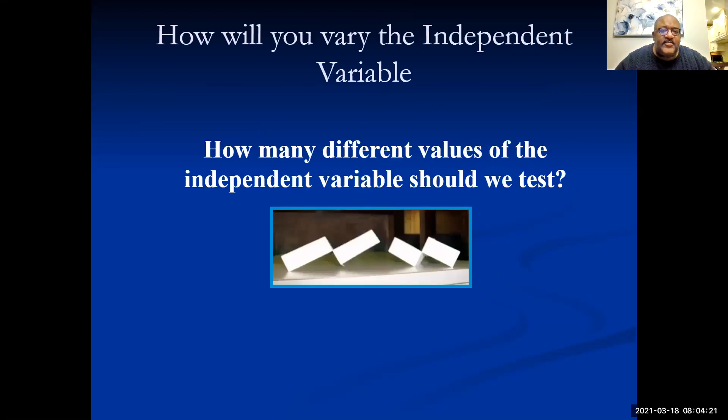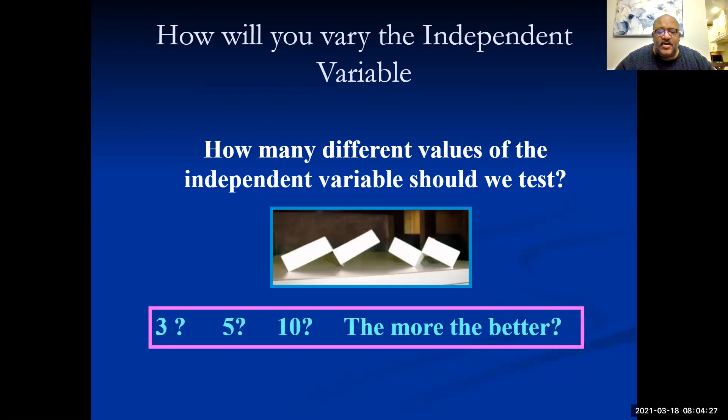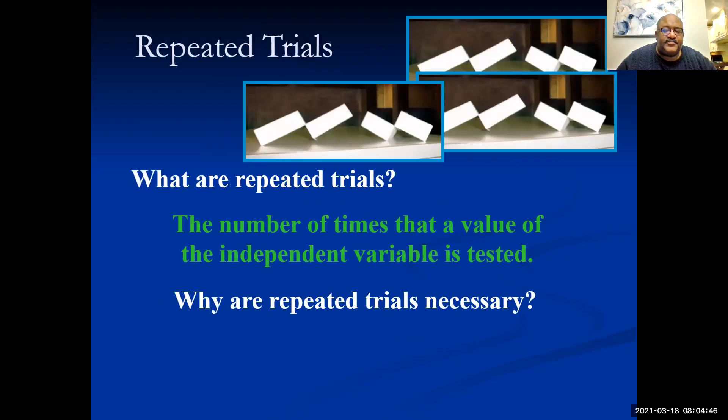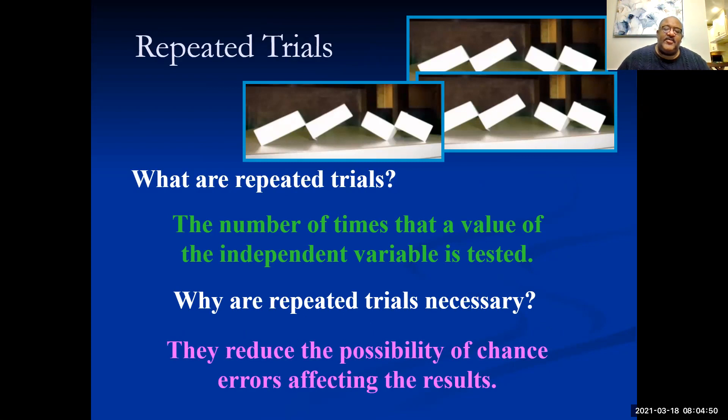How will you vary the independent variable? How many different values for the independent variables should we test? The more the better, because if you just do it twice that could be considered a fluke, but if you do it five or ten times, normally about ten times is a good trial measure. If I was doing room temperature I might change the temperature at intervals, like go up 20 degrees each time and see how much you sweat to a certain point.